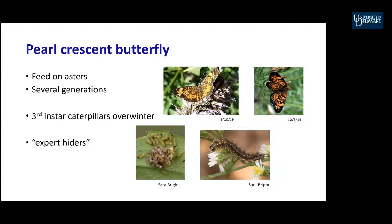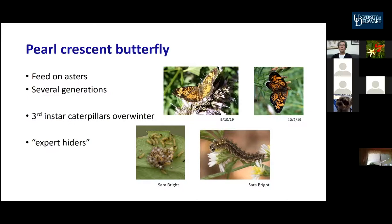Another example of larval overwintering is the pearl crescent butterfly, which feeds on asters. Though I've never seen the caterpillars — they're expert hiders — it goes through several generations. The third instar caterpillars overwinter, likely finding a place in the leaf litter underneath asters to spend the winter.